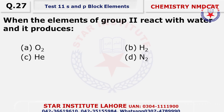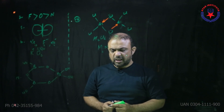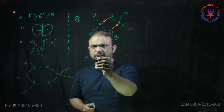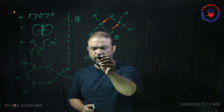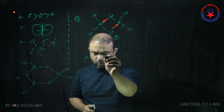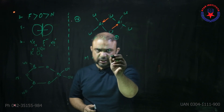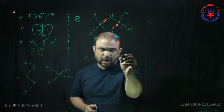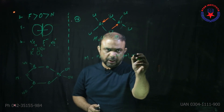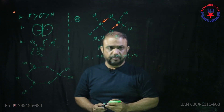Question number 27: When elements of group 2 react with water, the gas evolved is hydrogen. When any metal reacts with water, what we get is metal hydroxide, and hydrogen gas is evolved.